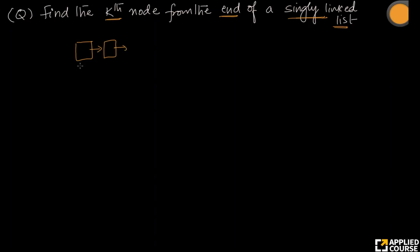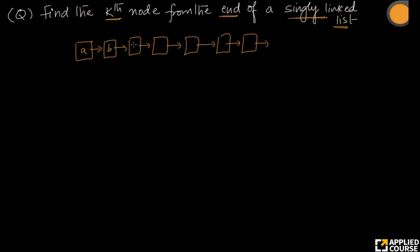Imagine if I have a singly linked list like this, where each node will have some value in them. Let us create a singly linked list and place some values — it could be any value. Let us say A, B, C, D, E, F, G. So let us assume I have seven nodes here just for simplicity.